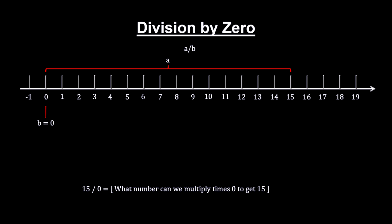But no matter what number we multiply by zero, you will always get zero, never a.